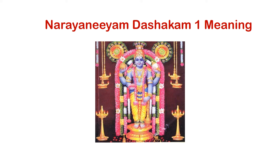Bhattatri says: being humble, those who surrender at your feet and pray without asking for any desires — you always bless them, because you are like the Parijata tree — a heavenly flower that fulfills unlimited boons. You are similar to that, but the people are so ignorant that they ask for small blessings: I want a house, I want money, I want a car. Like the Kalpaka tree from Indra's garden — 'Kshidram' — they will ask for small blessings.